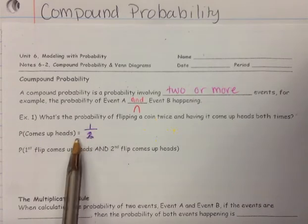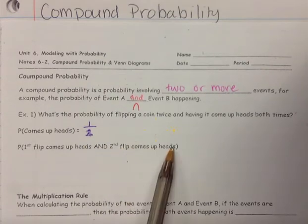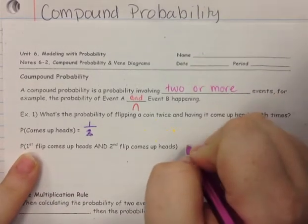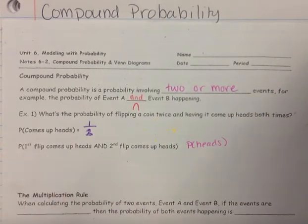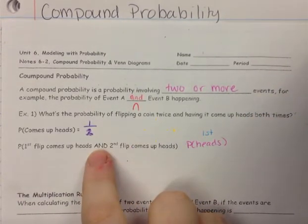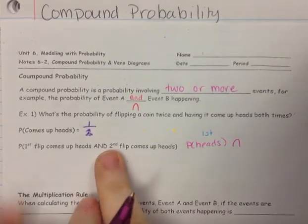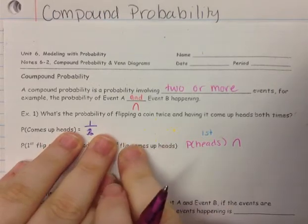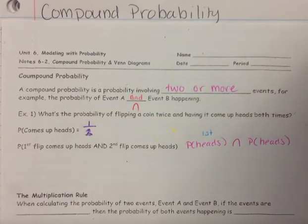Now that we understand the probability of just coming up heads, we want the probability that the first flip will come up heads and the second flip come up heads. So we write this out: we want the probability of heads — that's our first event. The symbol for 'and' is the intersection. Then we focus on what's the probability that the second flip will come up heads, so we write the probability of heads again. This is our second event.